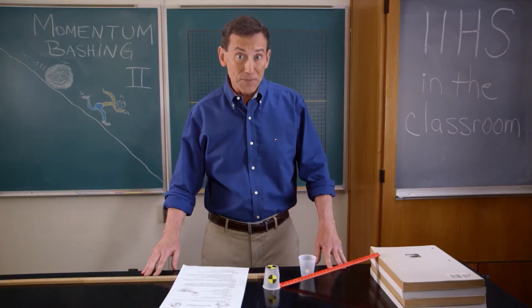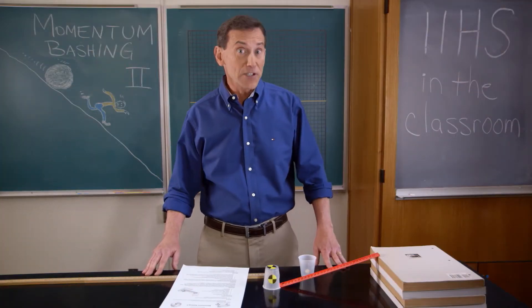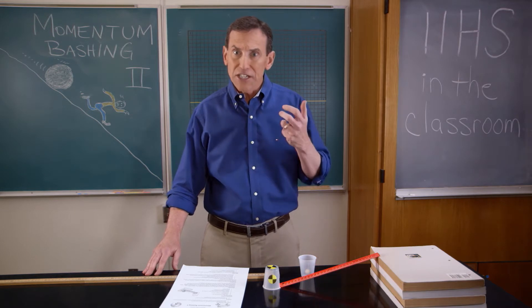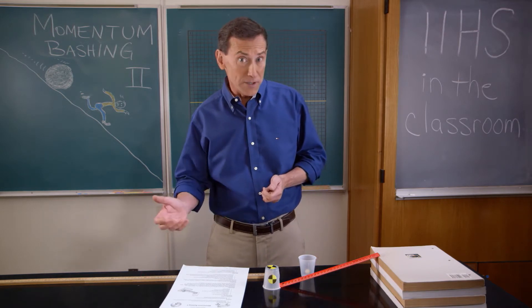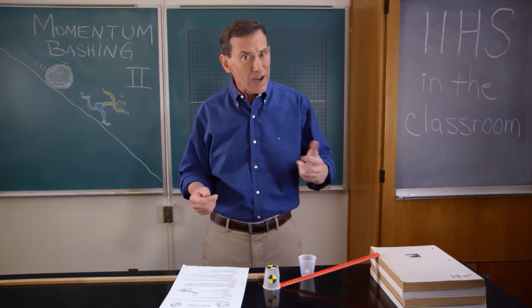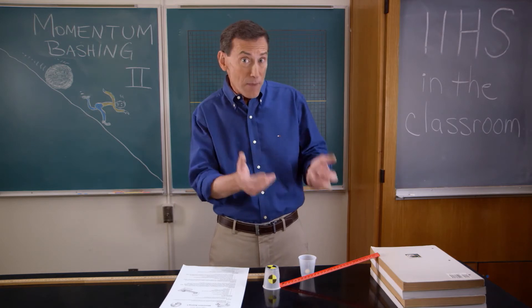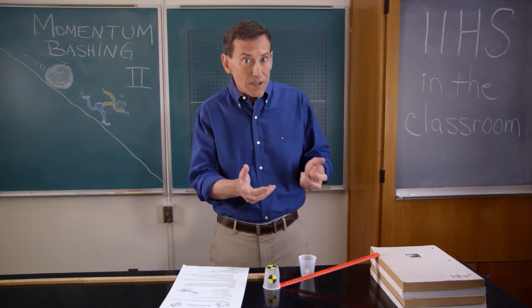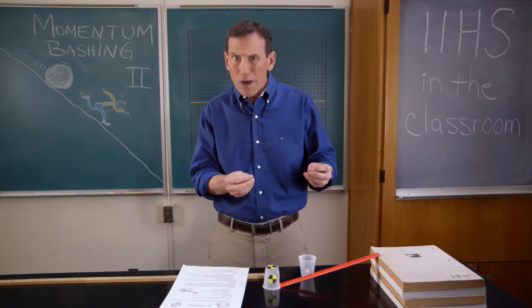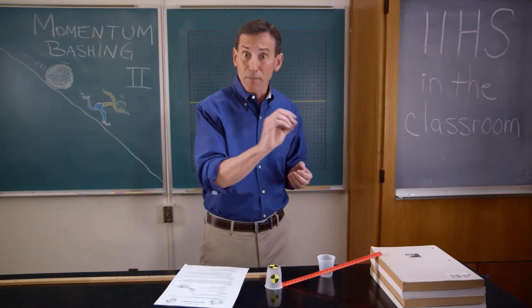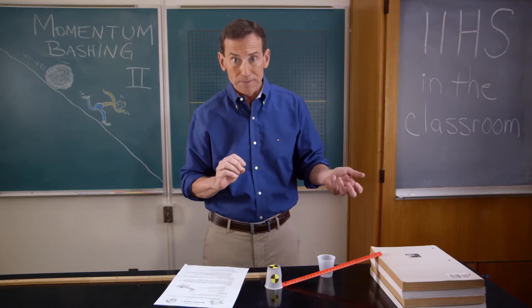Welcome to Momentum Bashing 2. In the first Momentum Bashing activity, we were looking at how changing an object's mass affects its momentum. However, we realized there was a flaw in our design using that variable of mass. We noticed that the marbles didn't quite work out so well. If we would have had four different sized marbles, each successively greater mass, it would have worked much better.